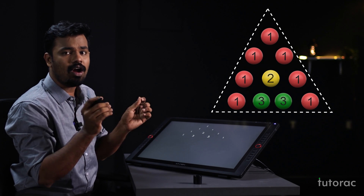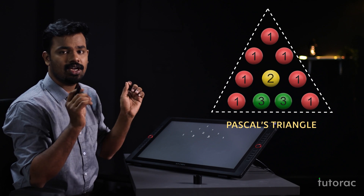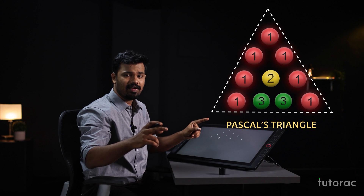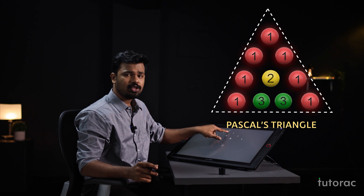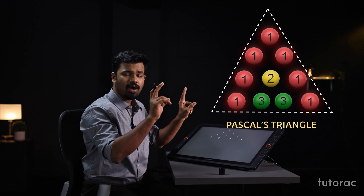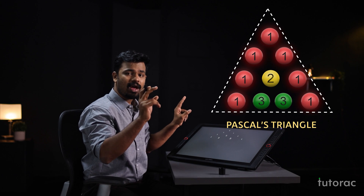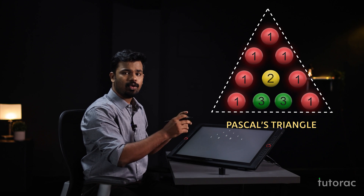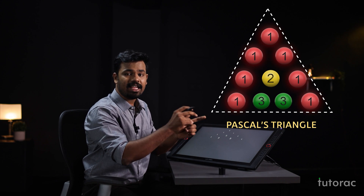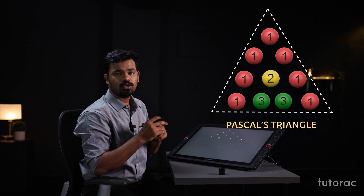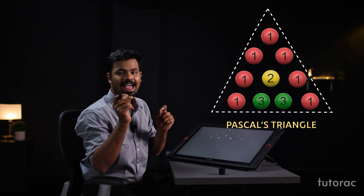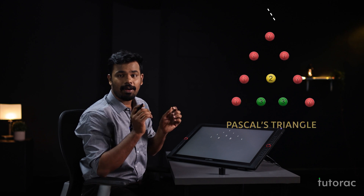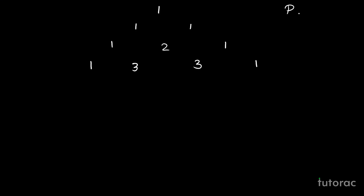And this triangle is called by the name Pascal's triangle. You can see that the endpoints of all the levels are 1. In the first one, you have a 1. Second, you have 1, 1. Third, again you have 1, 2, 1 — so again 1 and 1 at the ends. And again you are having 1, 3, 3, 1 — so again there is 1 at the beginning and at the end. This formation is called by the name Pascal's triangle.